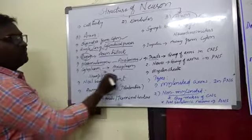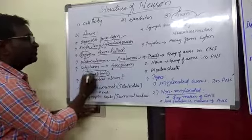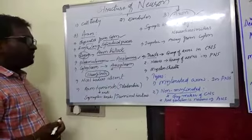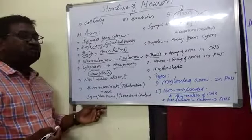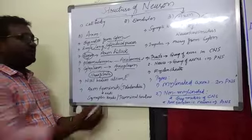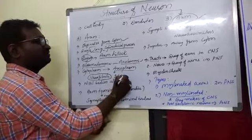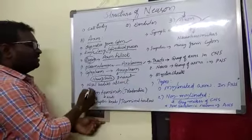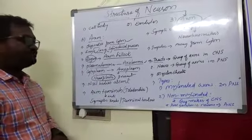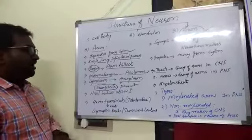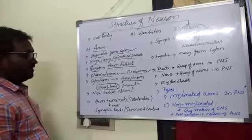In the axoplasm, neurofibrils are present. Only neurofibrils are present. Nissl's bodies and lipofuscin granules are absent from the axoplasm.